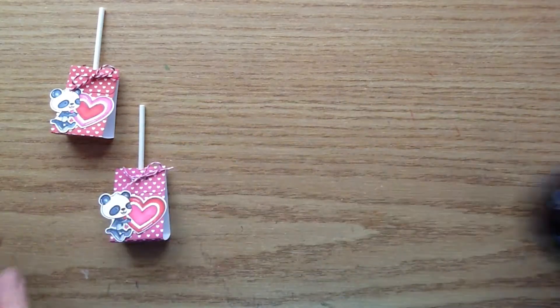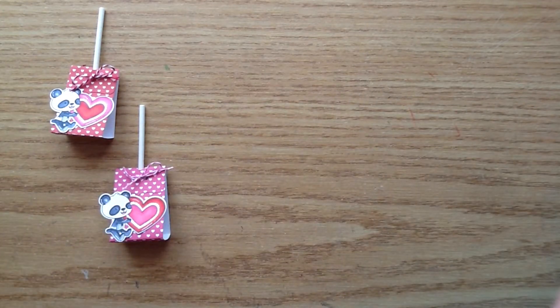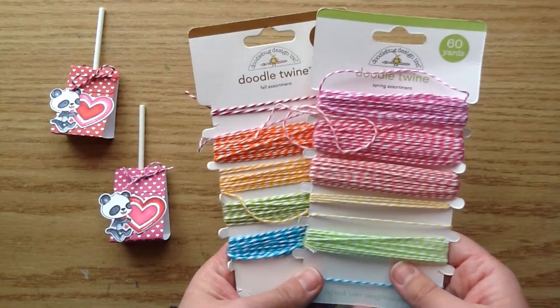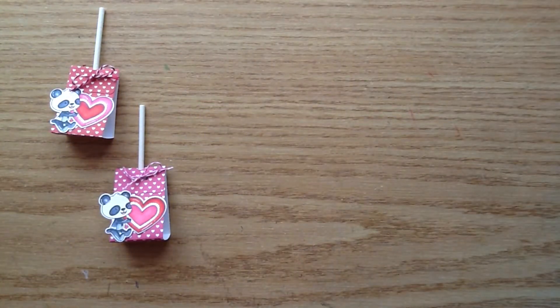So I'm going to share with you the products I used. I'll have them linked below. I used the Your Next Stamp Black Olive Ink and wire die cut snips. I also used the Doodlebug twine here. I just used some pink and red to tie the twine portion at the top.